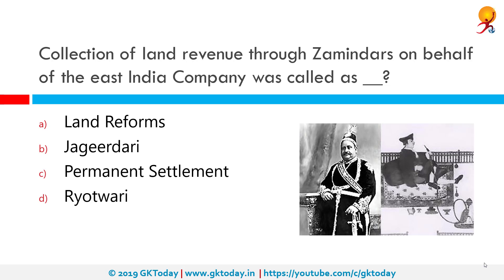Collection of land revenue through Zamindars on behalf of the East India Company was known as Permanent Settlement. The Permanent Settlement Act, also known as the Permanent Settlement of Bengal, was an agreement between the East India Company and the Bengali landlords to fix revenues to be raised from the lands.